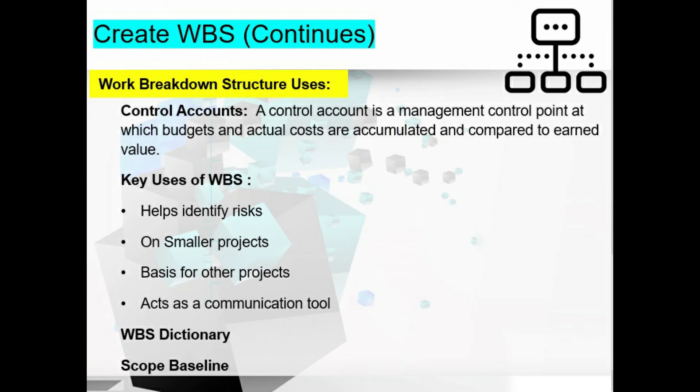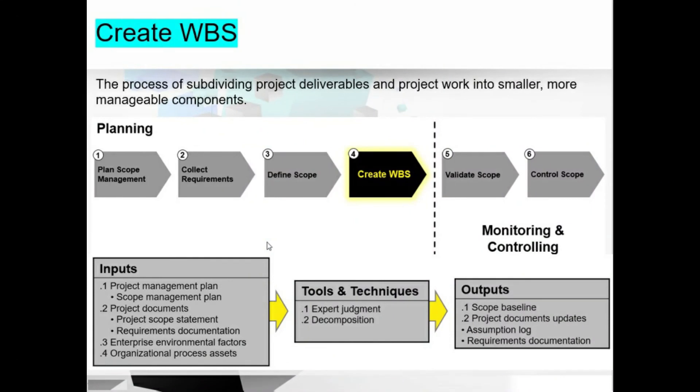The WBS dictionary prevents scope creep before work starts on the project. It can include descriptions of schedule milestones, acceptance criteria, durations, interdependencies, and other information about work packages. The scope baseline is made up of the final approved versions of the WBS, WBS dictionary, and project scope statement — approved at the end of planning before project work begins. The inputs to create WBS are the scope management plan, project scope statement, and requirements documentation.